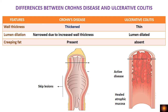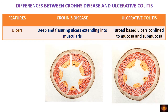In ulcerative colitis, the lumen is dilated. Creeping fat — fat that appears to wrap around the intestine — is present in Crohn's disease but absent in ulcerative colitis. These are the external surface findings when viewing the intestine.